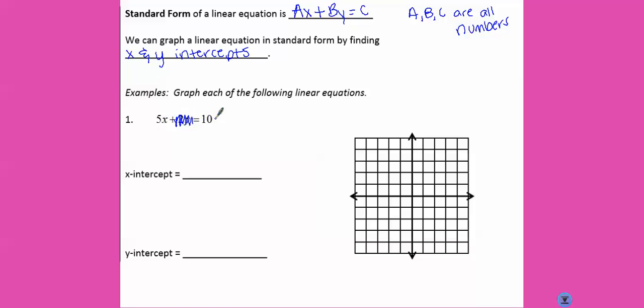And we get 5x equals 10. We would solve that by dividing both sides by 5, and we get that x equals 2. That's our x intercept.